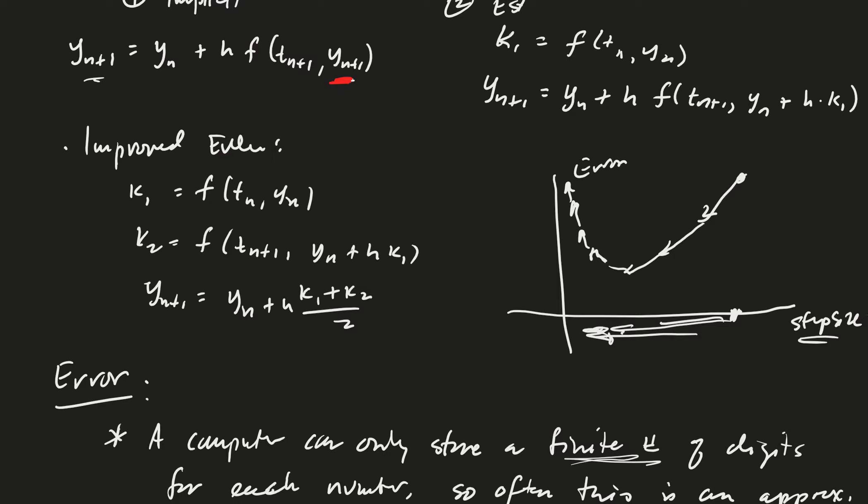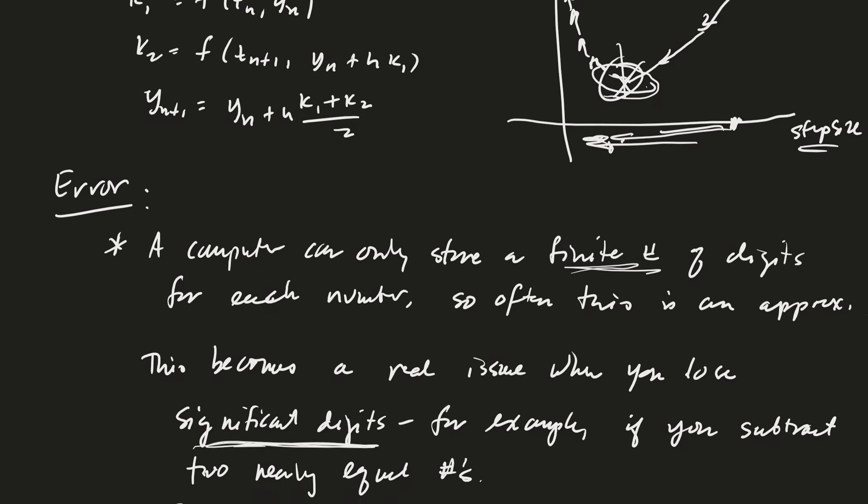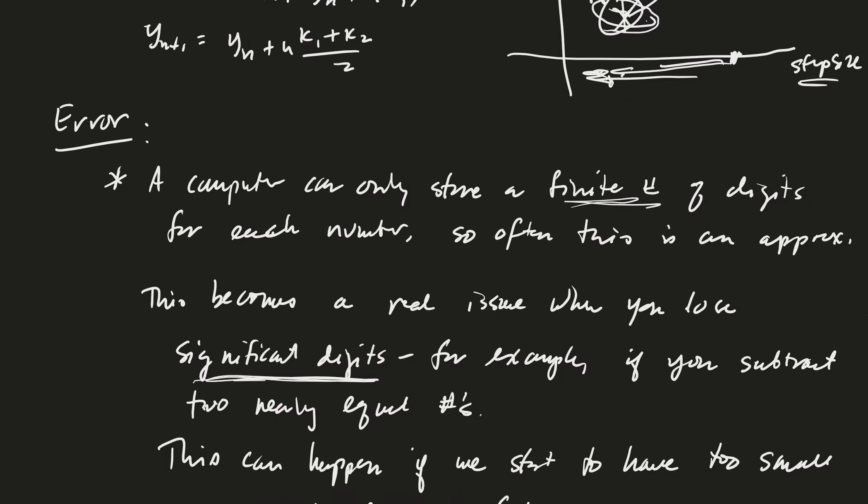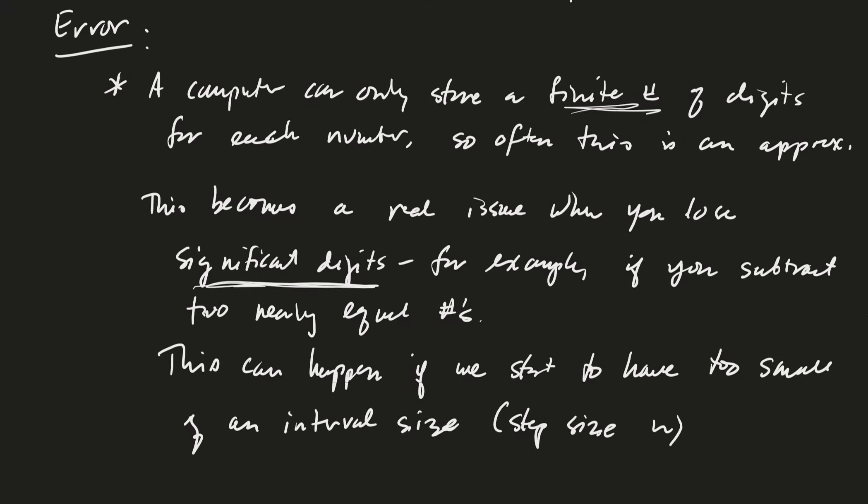But then if the step size gets too small, round-off error starts to build up and error increases. Theoretically, you'd want a step size at the bottom of this curve, but that's very difficult to find. This is just a theoretical estimate anyway. My caution is that you can't just crank down the step size to get a more accurate answer - you have to be careful.